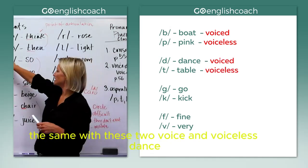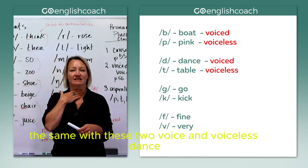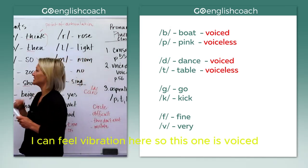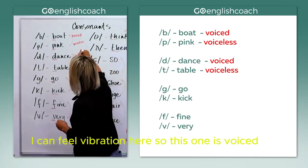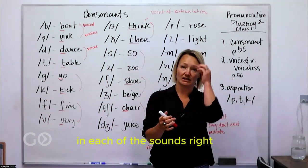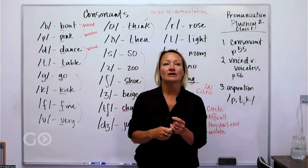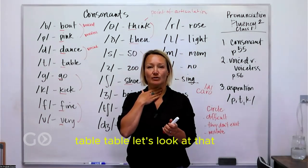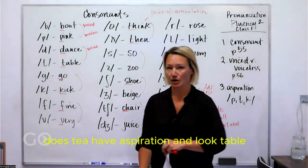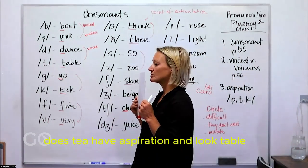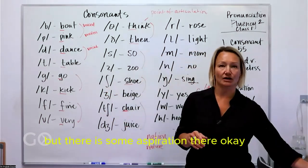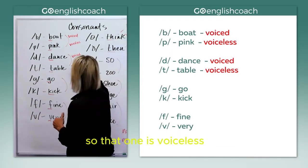Okay, the same with these two — voiced and voiceless. 'Duh' — I can feel vibration here, so this one is voiced. Remember we discussed this being the same point of articulation in each of the sounds. 'Tuh' — 'table.' Does T have aspiration? Table — I have to push it out, but there is some aspiration there, so that one is voiceless. That is the only difference: one is voiced and one is voiceless.